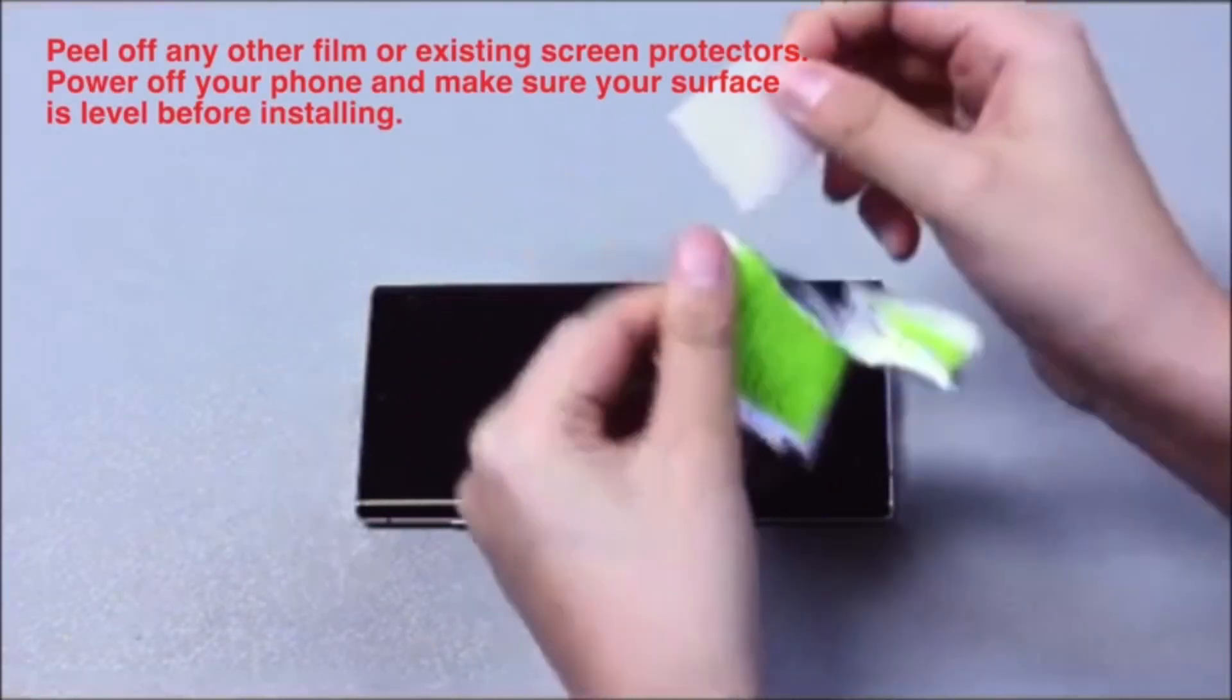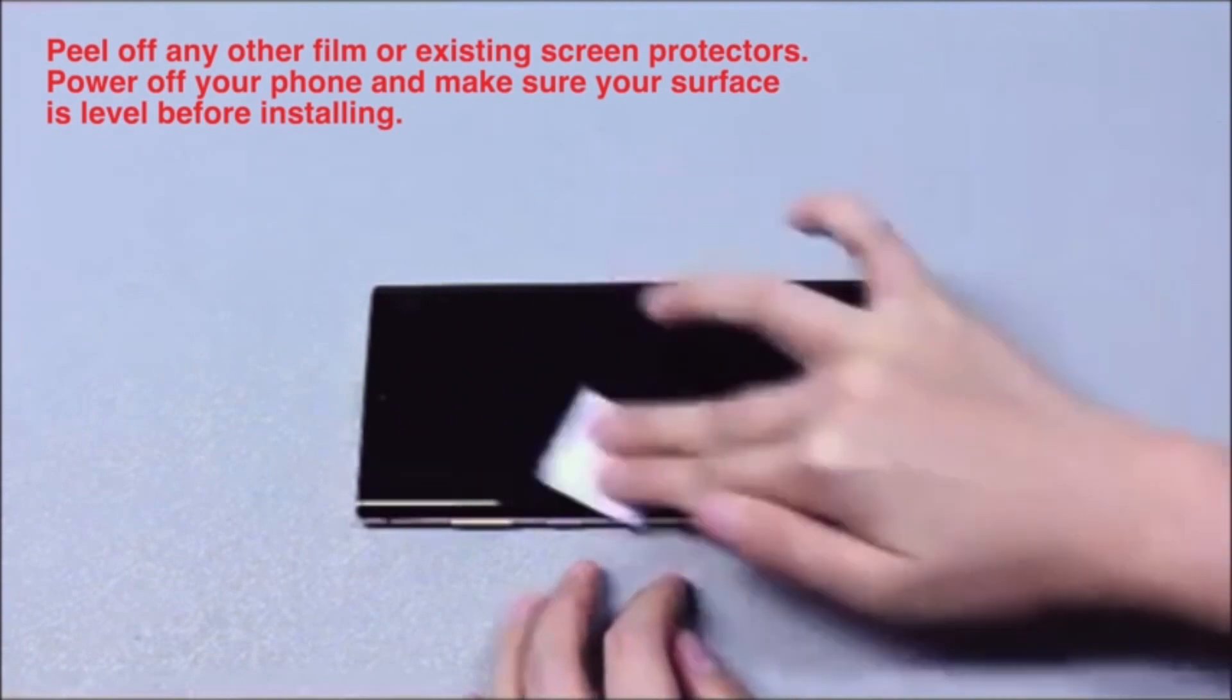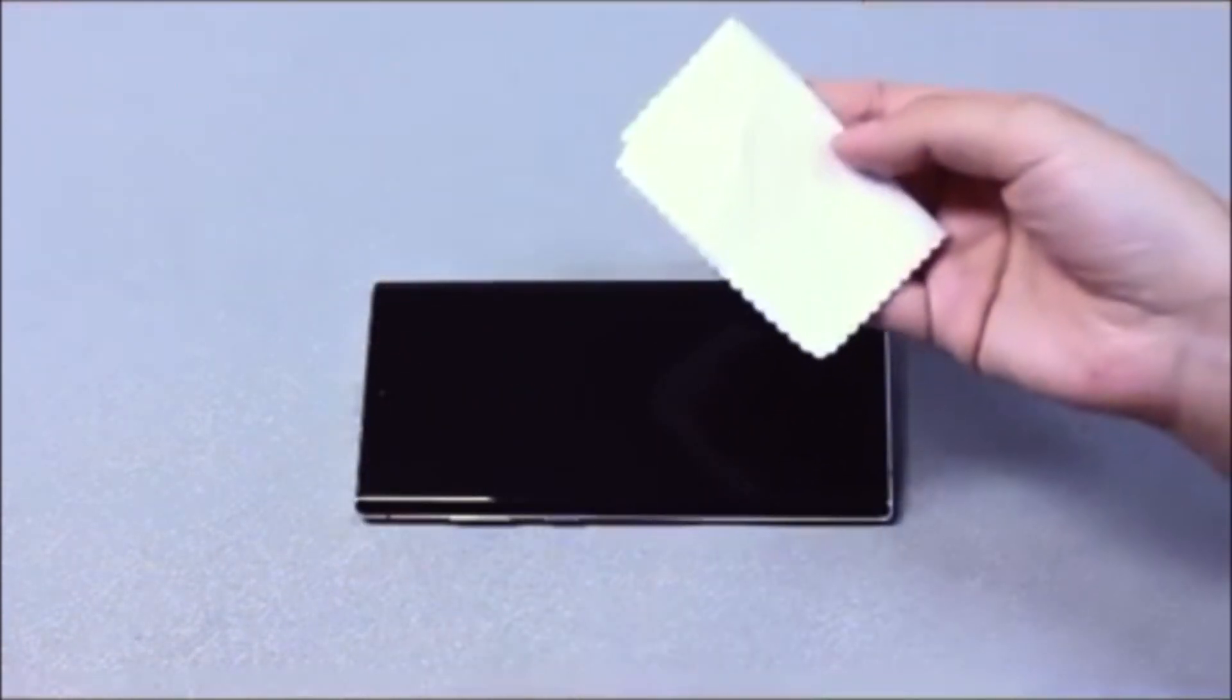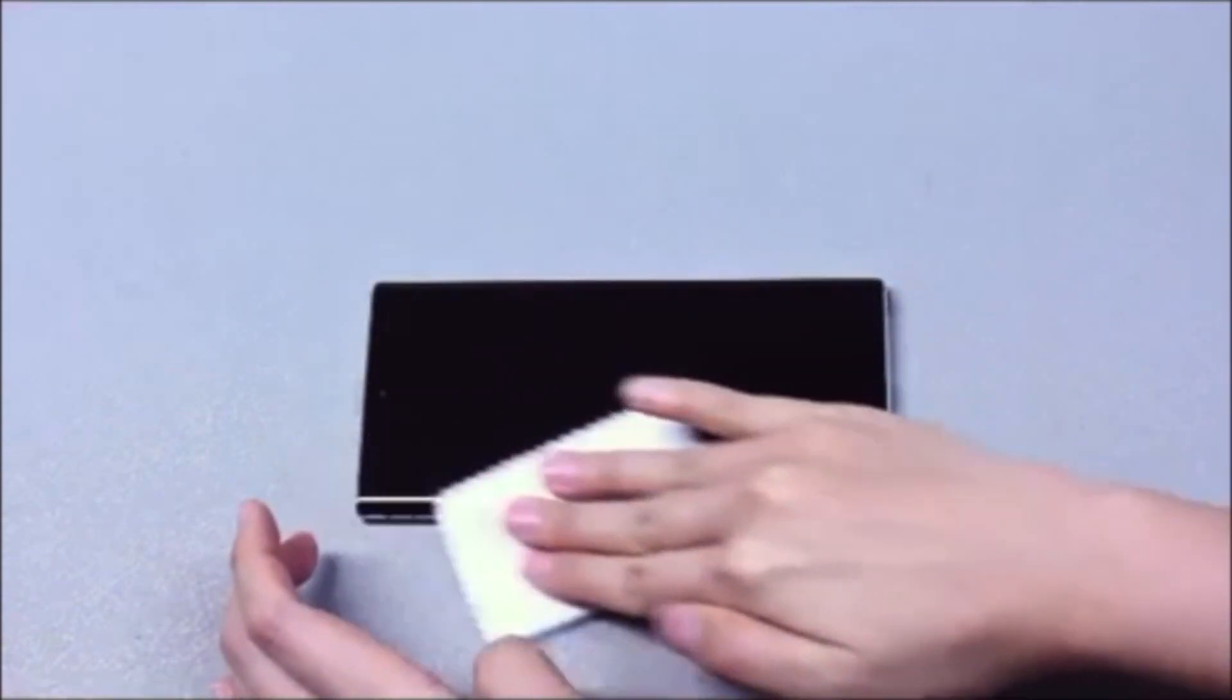Next, completely wipe the screen with an alcohol pad. Make sure you get along all the edges. Now, dry it off with this cleaning cloth.